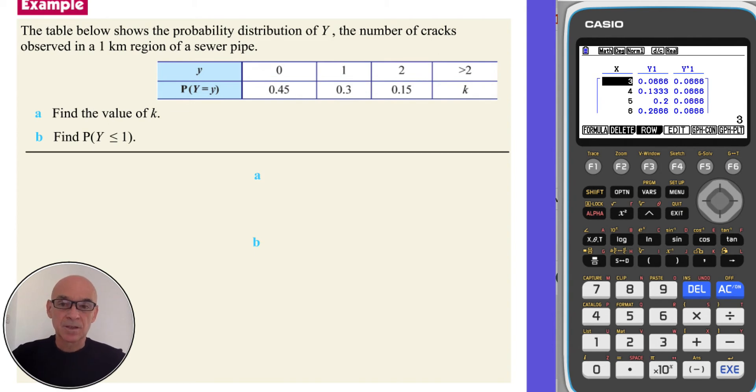In this question, the table shows the probability distribution of Y, the number of cracks observed in a one kilometer length of sewer pipe. And we're asked to find the value of K. So we need to use the fact that the sum of the probabilities always add up to 1. So we can write an equation involving K, and then solve it. As you can see, K is equal to 0.1.